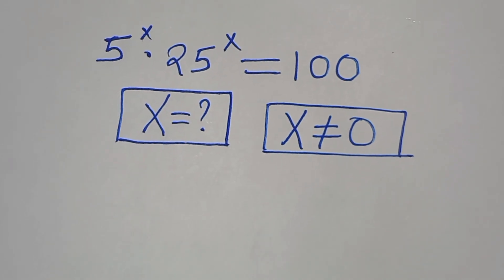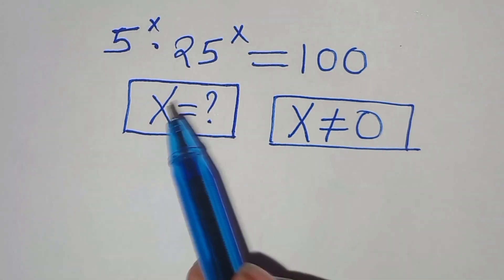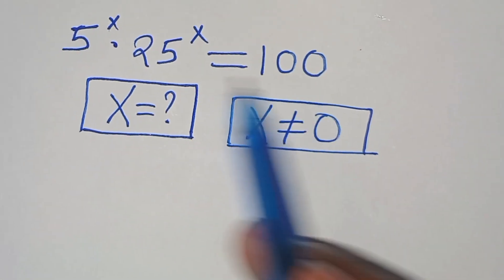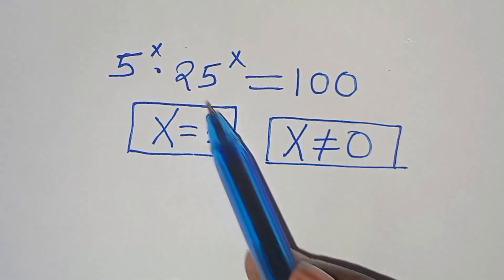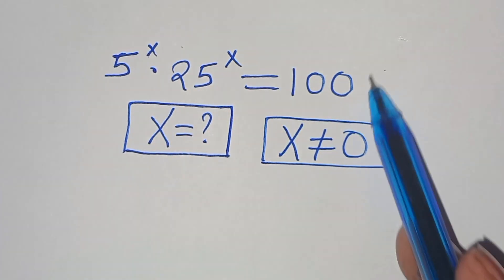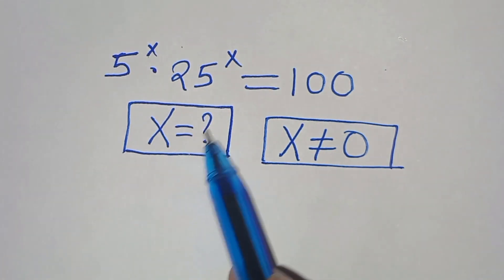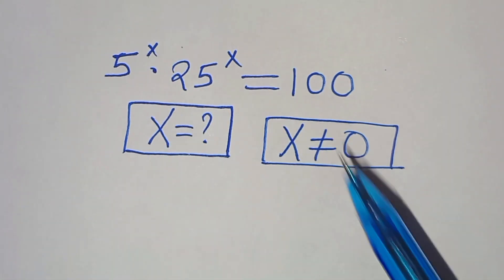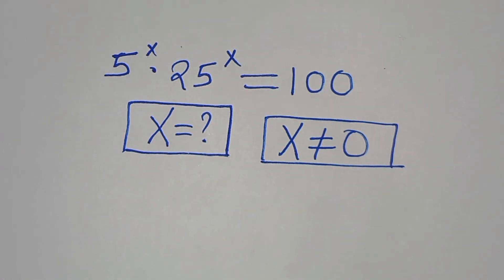Hello everyone, you are welcome to solve this nice exponential problem which is 5 to the power of x times 25 to the power of x, and this is equal to 100. So what is the value of x, given that x is not equal to 0?